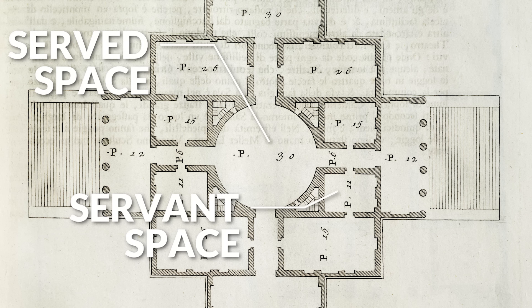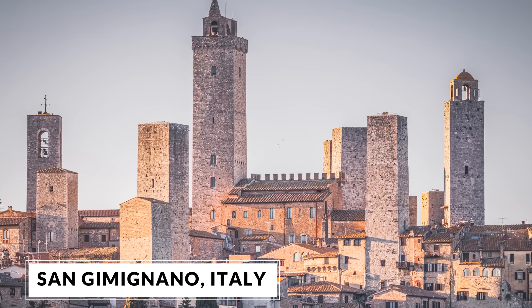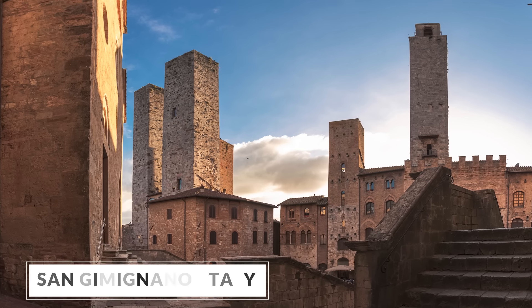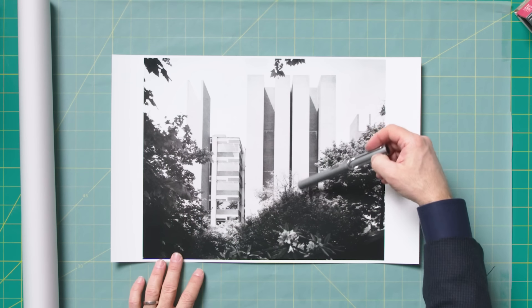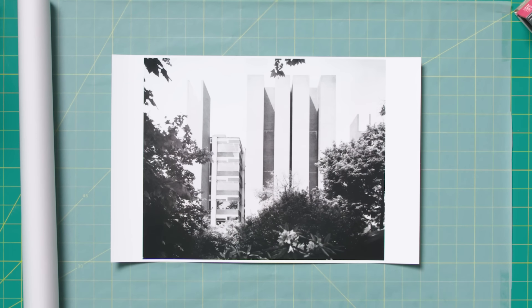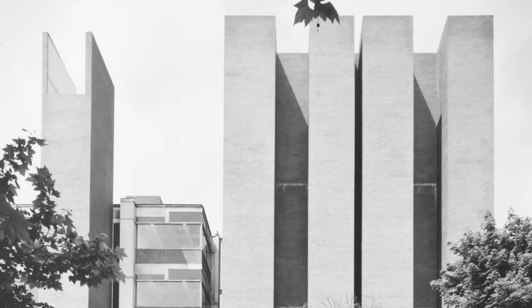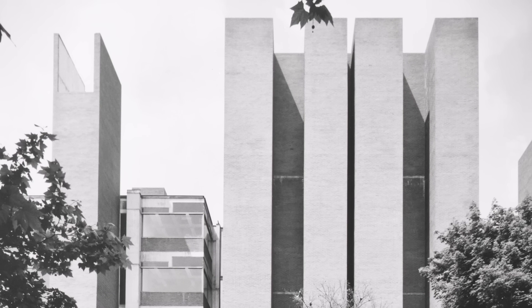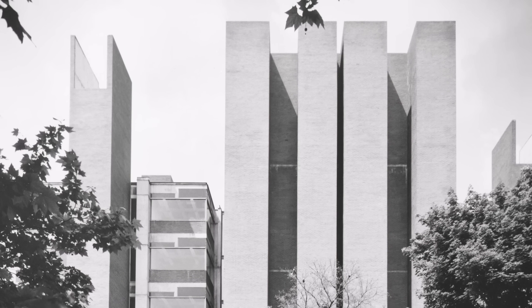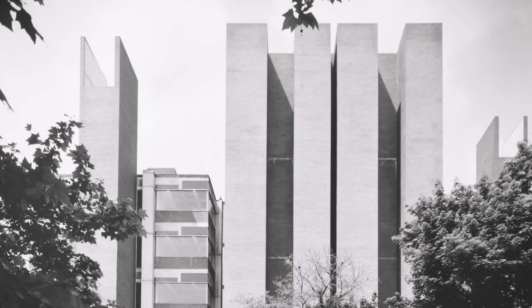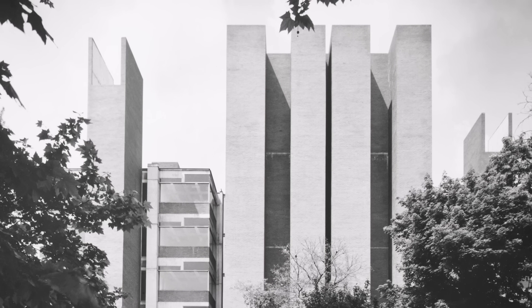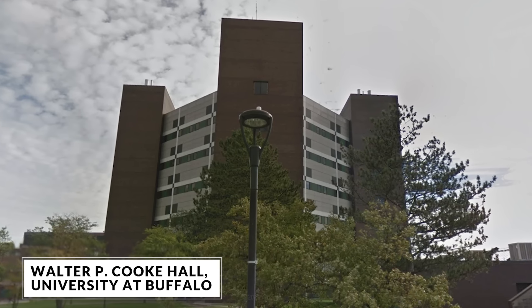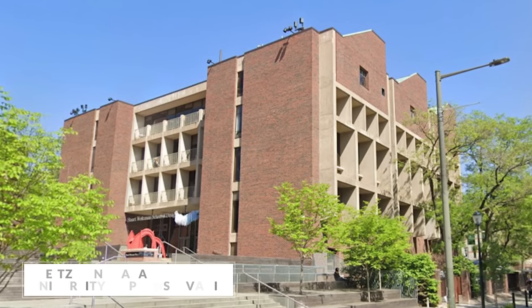Another influence on the building's design was the Italian hill town of San Gimignano, with all its beautiful towers — the exhaust and air intake towers on the outside of the building are very reminiscent of these. This building was so influential that there was an exhibition devoted entirely to it at the Museum of Modern Art, which stated it was probably the single most consequential building constructed in the United States since World War II. Nearly every college campus in the U.S. has a building that was imitating it.